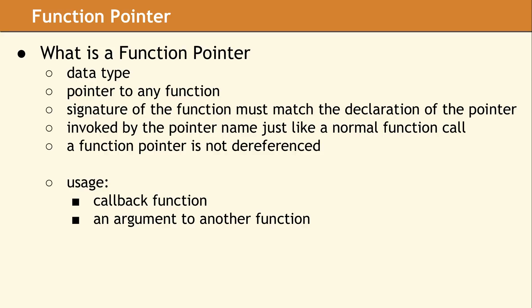A function pointer is actually a data type whose value points to a particular function. This pointer does not point to data, which is the normal usage of a pointer. In order to declare a function pointer, you have to specify the signature the function pointer will point to. A function pointer may only point to a function which has a matching signature.